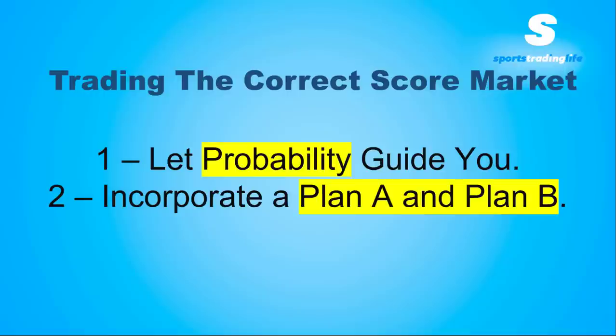People have seen this on our videos before and misunderstood it slightly. They thought Plan A is to cover score lines where the favorite wins, and Plan B means covering loads of score lines where the favorite doesn't win. Before you know it, some people are just trying to cover every score line in the correct score market apart from maybe one or two. Well, your profits aren't going to be very big if you start to cover every score line.